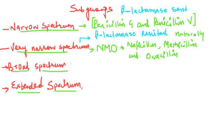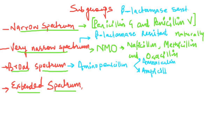In the broad spectrum penicillins, we have the aminopenicillin group, which contains drugs like amoxicillin and ampicillin. These broad spectrum penicillins are also beta-lactamase sensitive, meaning they will be destroyed by bacteria producing beta-lactamase, and hence they will not act on beta-lactamase-producing bacteria.